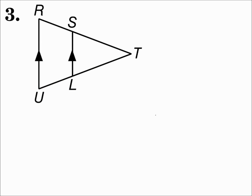Number three. Here we have two triangles, but no angles or sides are marked. However, there are parallel lines. With parallel lines, we have different types of congruent angle pairs. If those two lines are parallel, then angle R and angle LST are congruent because they're corresponding angles, and angle U and angle SLT are congruent because they're corresponding angles. That's two pairs of congruent angles, so these triangles are similar because of angle-angle similarity.